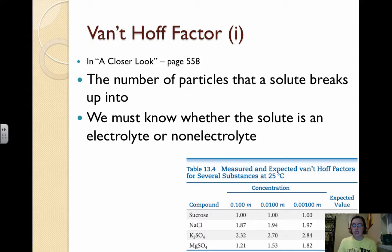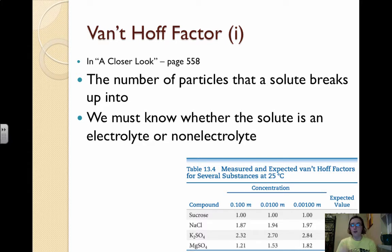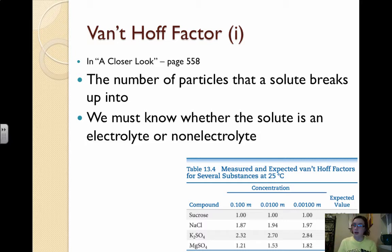We need to look at how many particles or ions each solute dissociates into, so we have to know whether the solute is an electrolyte or a non-electrolyte. An electrolyte is simply a soluble salt that dissociates into ions. You have to keep in mind those solubility rules, because if it's soluble, it's an electrolyte — it dissociates into its ions.